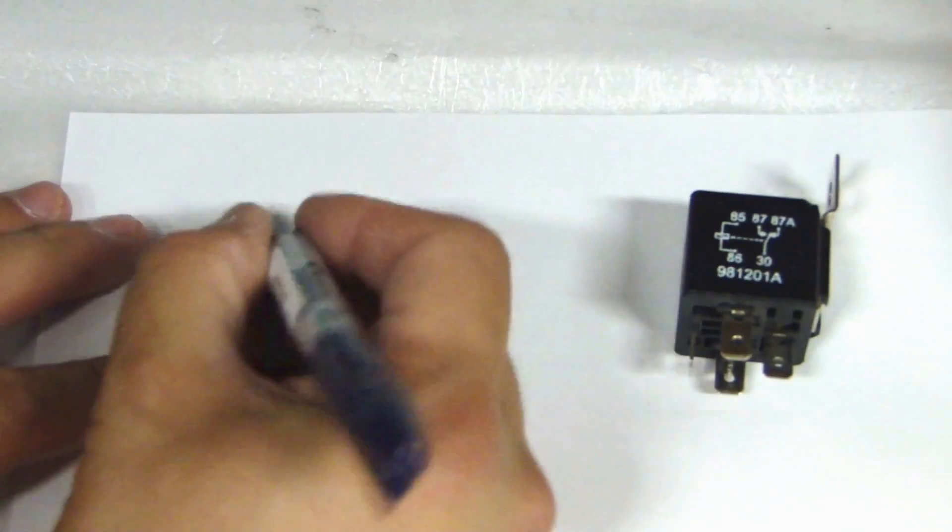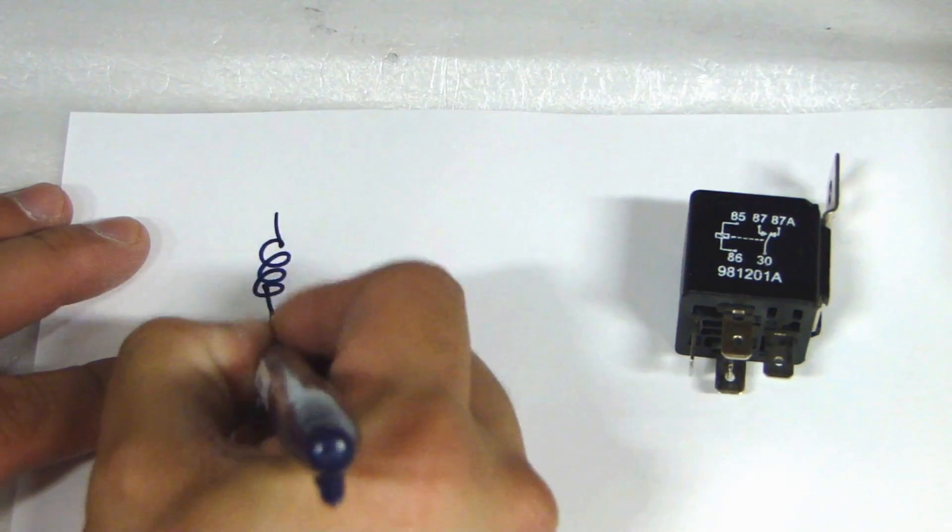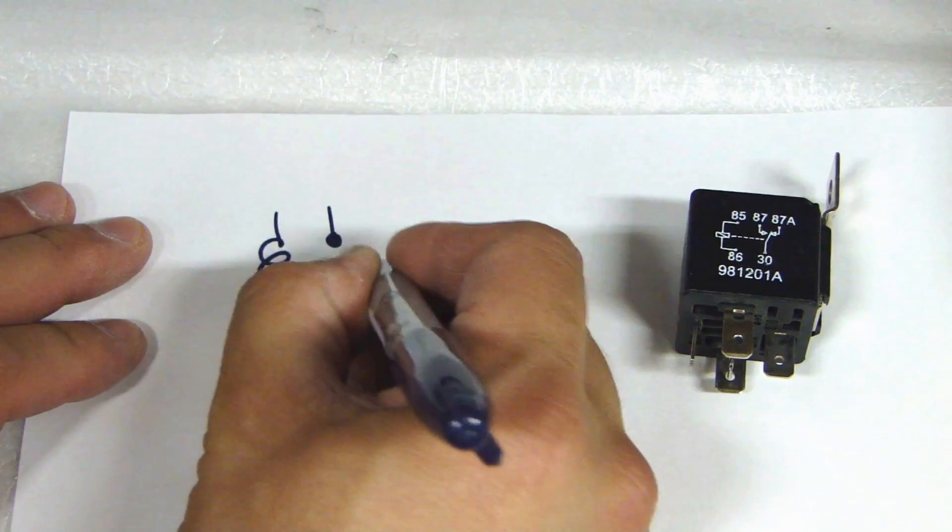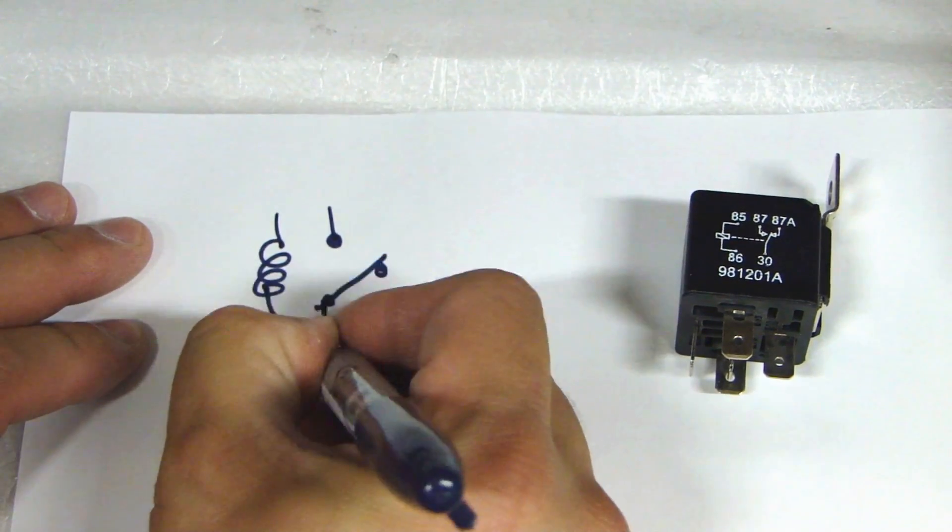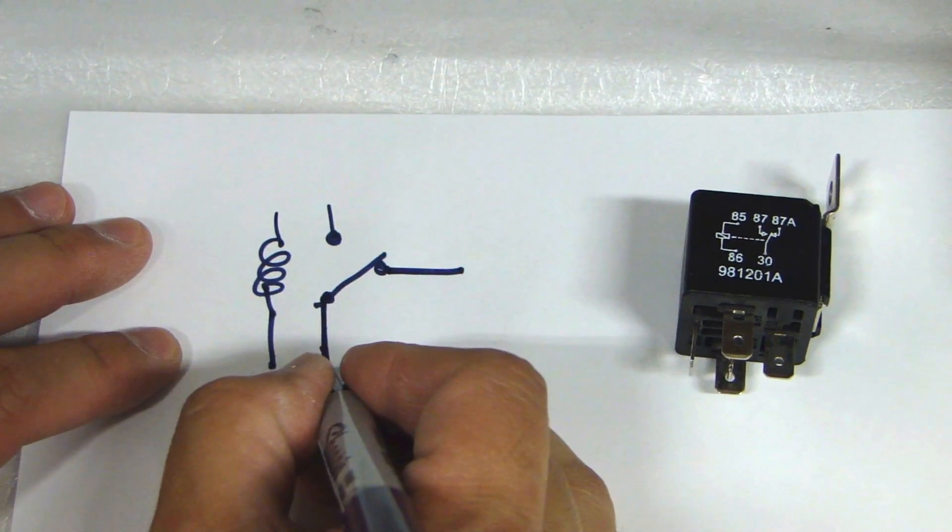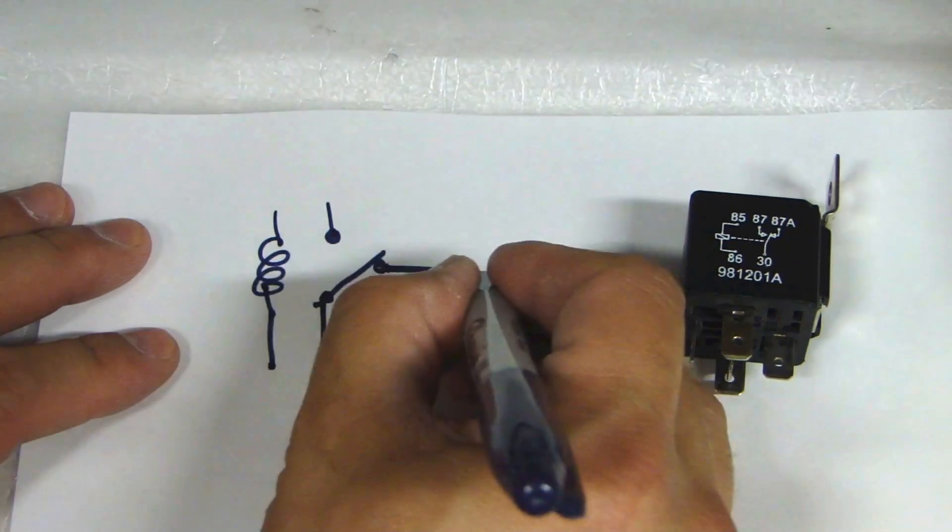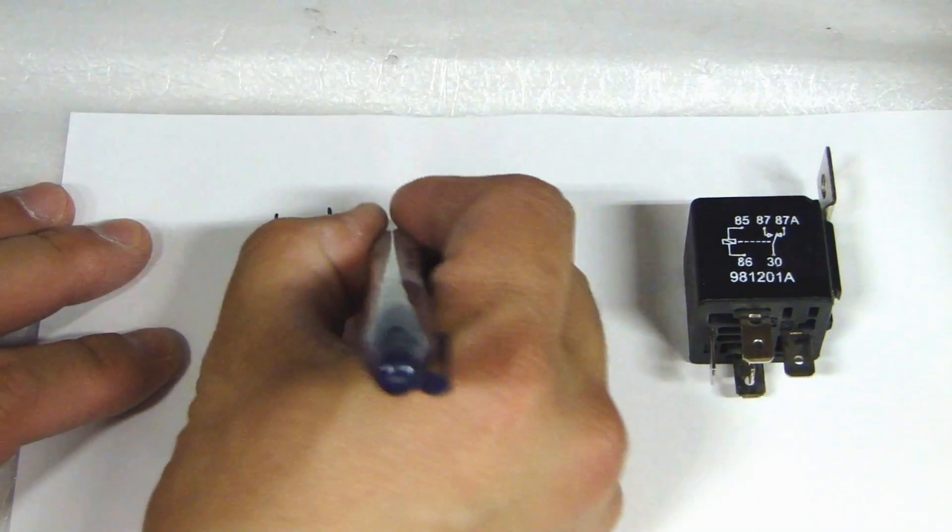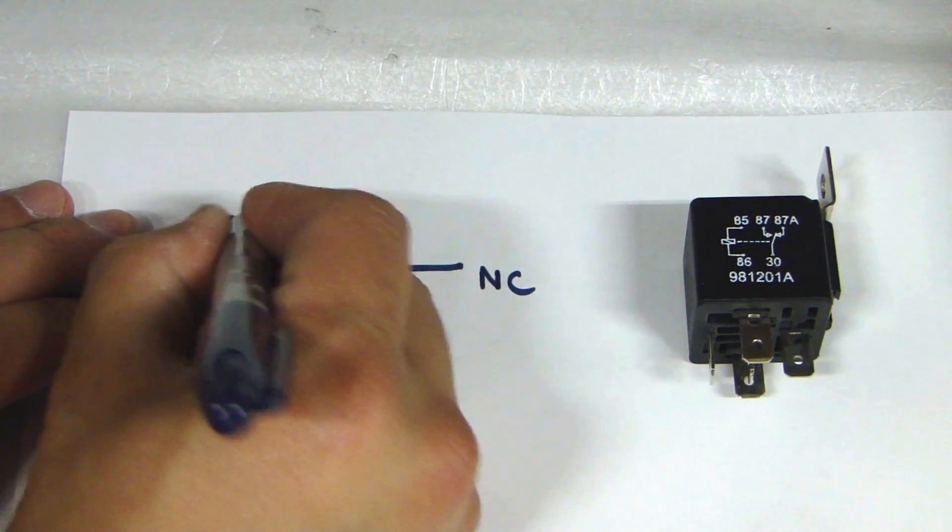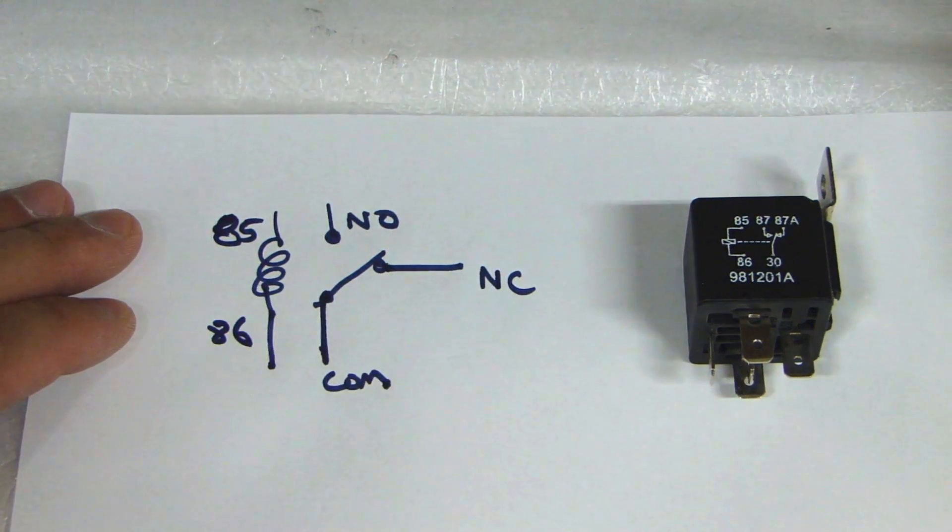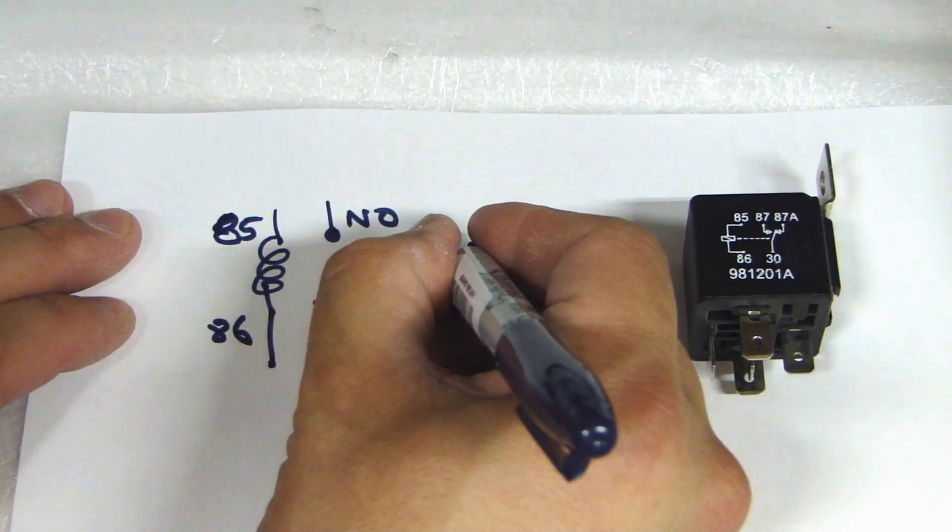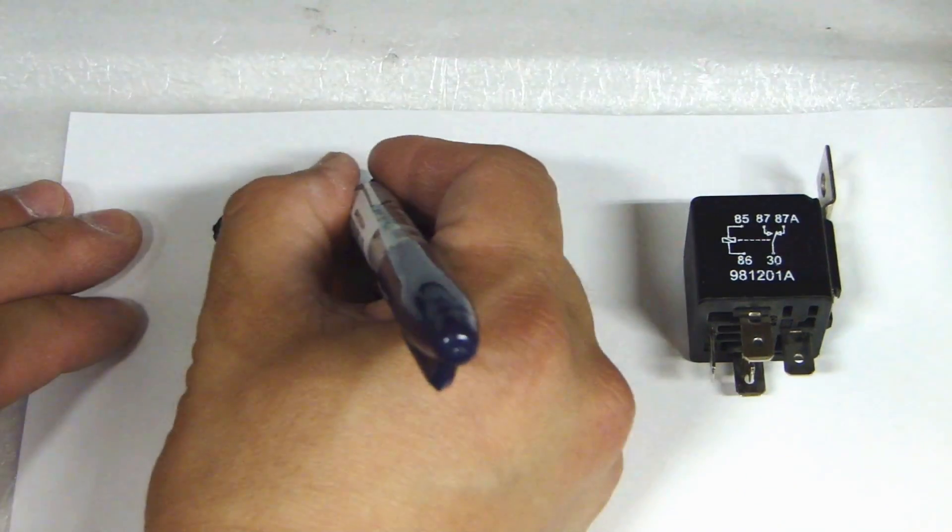Let me draw it out so it will make more sense to you. For this relay, we have a coil. Inside the relay on the switch side, this is what we have for contacts. So this is your common, this is your normally closed, this is your normally open. And the coil is pin 85 and pin 86. The common is pin 30, normally closed is 87A and normally open is 87.